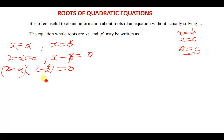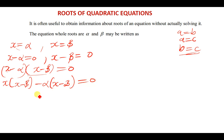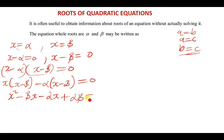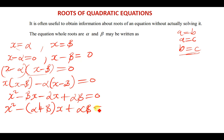The next thing we need to do is expand this expression. x multiplies everything in the bracket: x times x gives x squared, and x times negative beta gives negative beta x. Then negative alpha multiplies x minus beta: negative alpha times x gives negative alpha x, and negative alpha times negative beta gives positive alpha beta, all equal to 0. We can now collect the middle terms: x squared minus (alpha plus beta)x plus alpha beta equals 0.